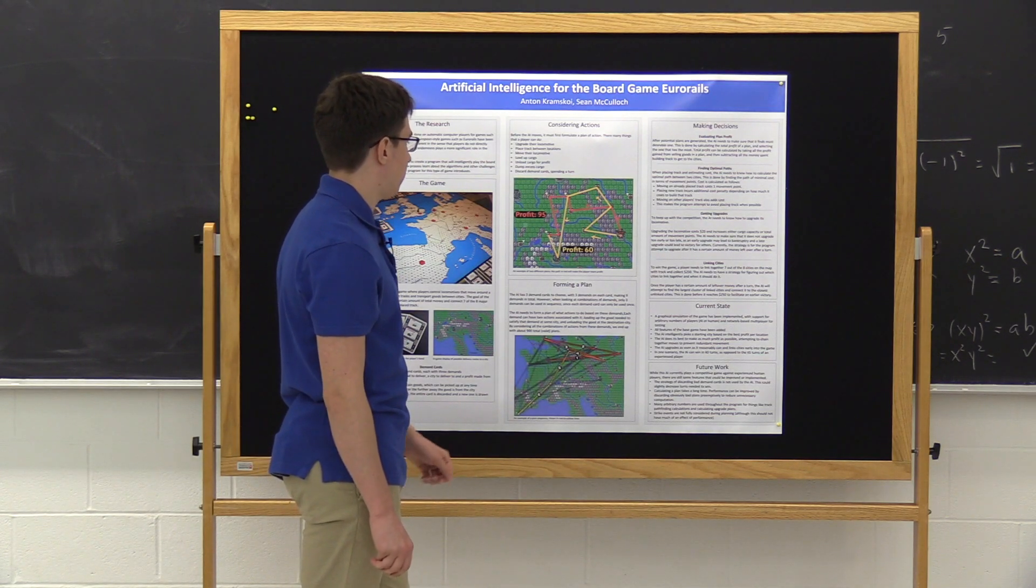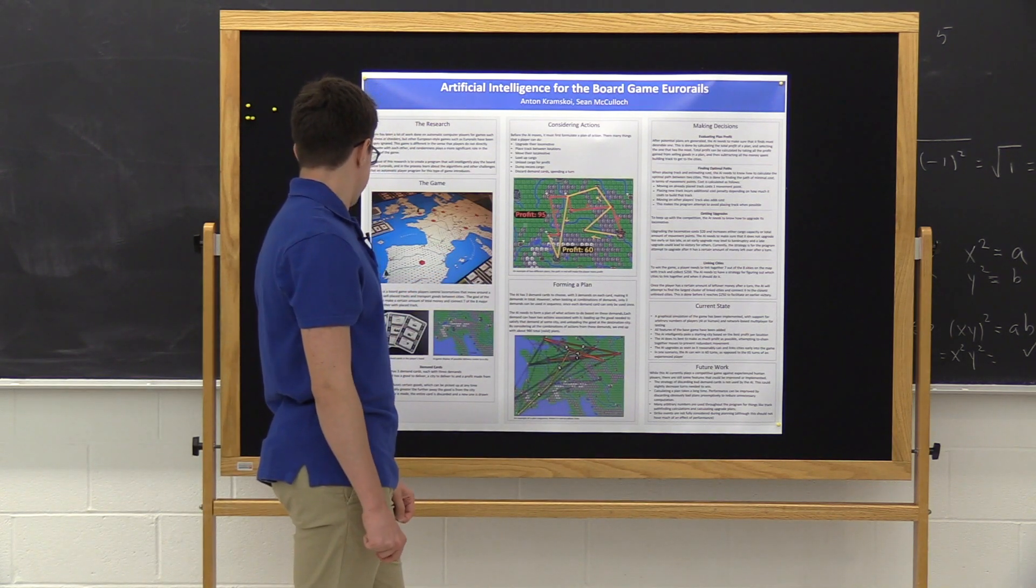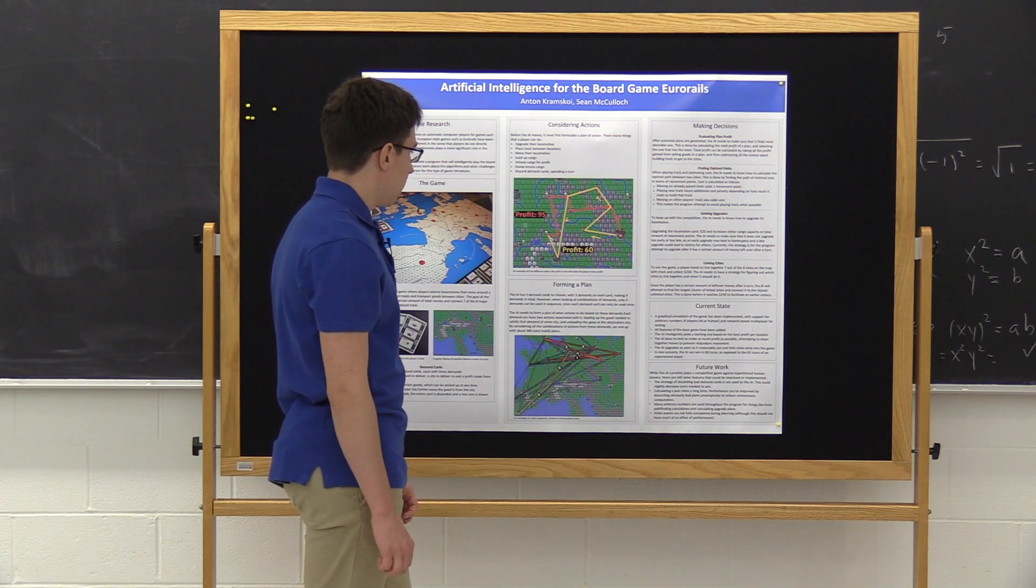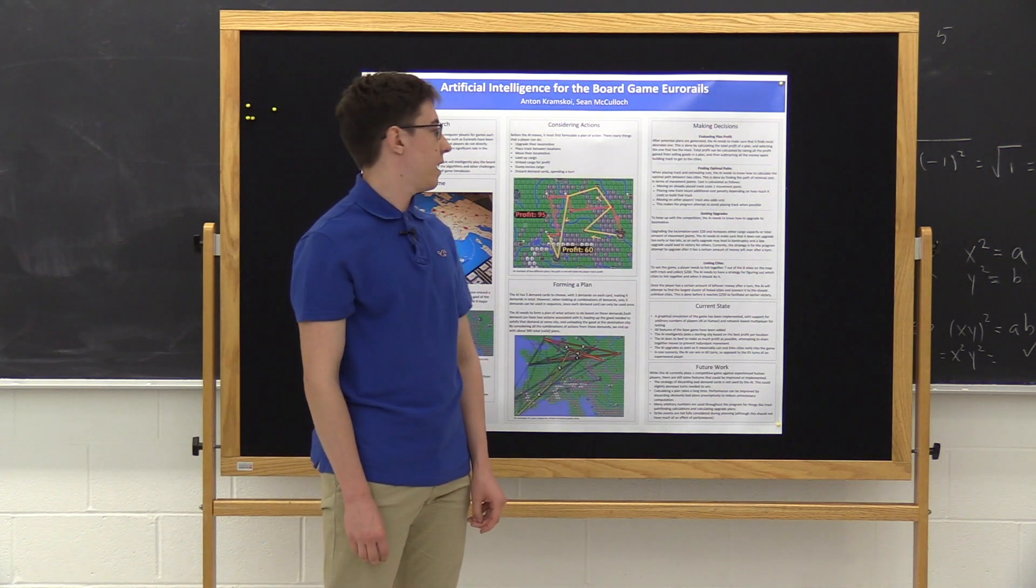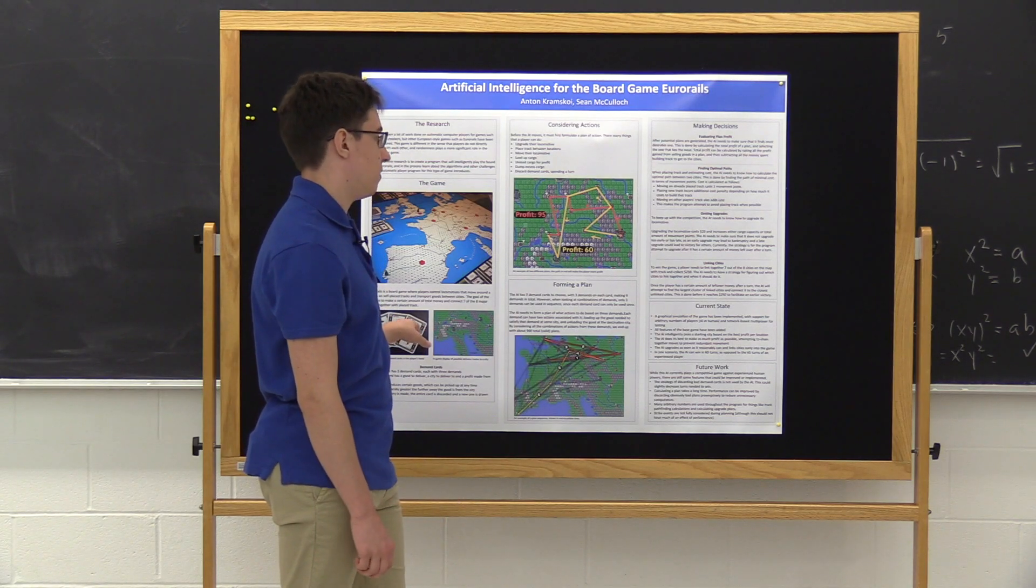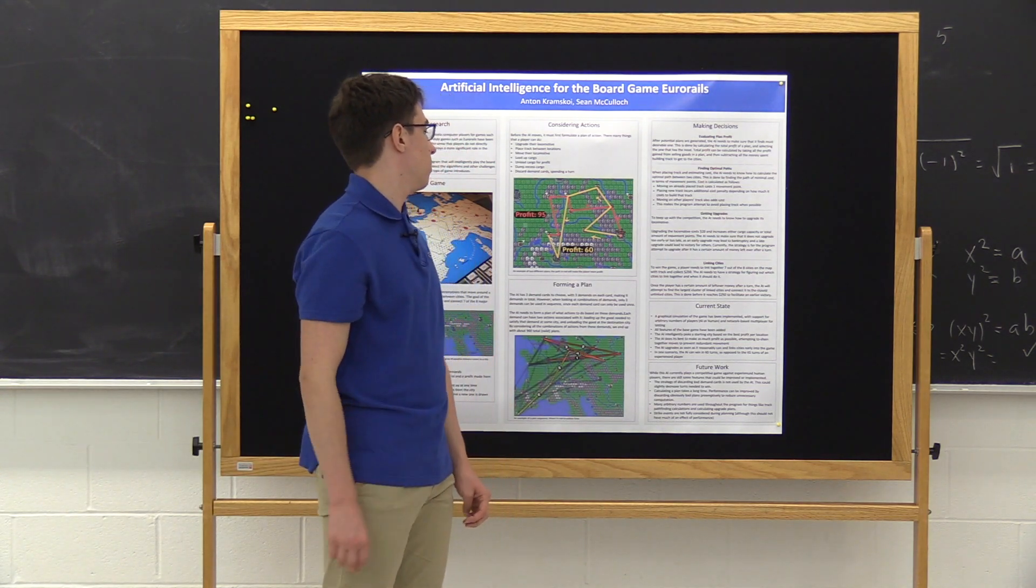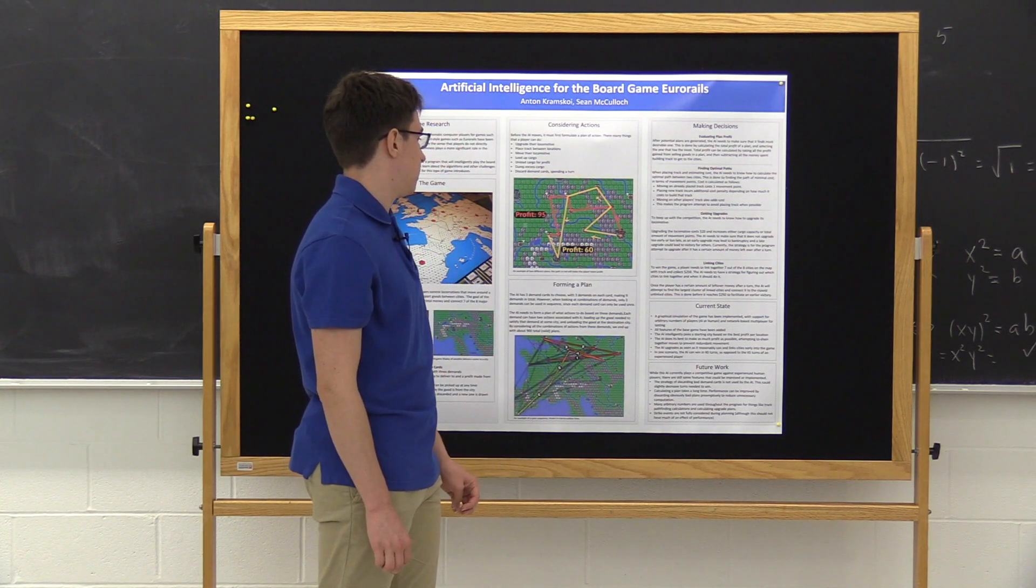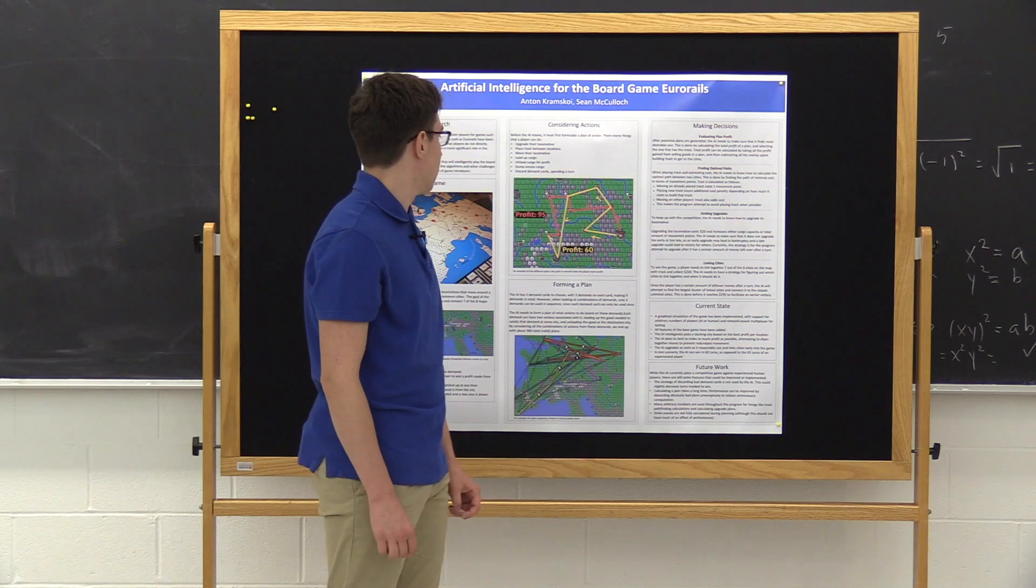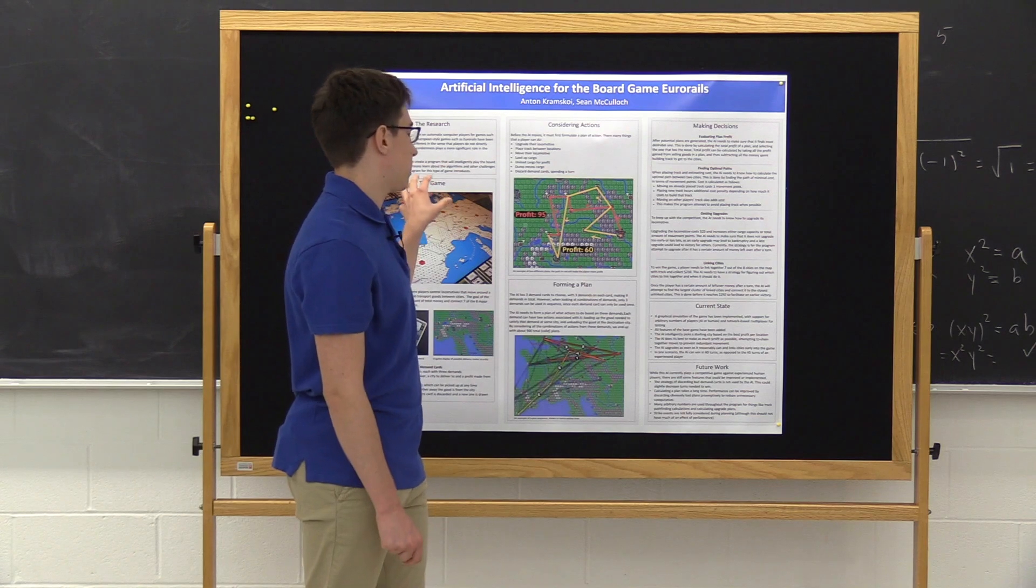Once the AI has a track set up, it will attempt to execute the plan which gives it the most profit. The AI also has other actions it can perform, such as discarding demand cards, which will give it a new set of cards to satisfy, a strategy done by expert players when they think their cards are bad enough. It can also upgrade its locomotive to increase its speed per turn, and it can also begin to link together cities to actually win the game.